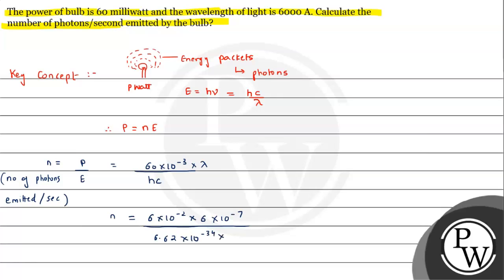From here, 36 divided by 3 gives 12. Combining the powers of 10, we get (12×10⁻⁹×10¹⁷)/6.62. Therefore, n comes out to be 1.81×10¹⁷ photons per second. This is the answer to the question.